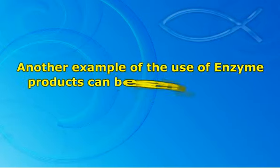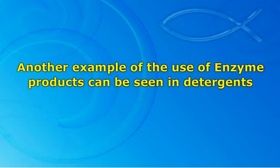Another example of the use of enzyme products can be seen in detergents. Detergents use enzymes as one of their most active components in removing stains. Stains are chemically composed of proteins and fat, which makes them vulnerable to the actions of enzymes since enzymes are capable of breaking down protein and fat. Also, some enzymes perform better in higher temperatures and some in lower temperatures — characteristics essential in knowing when to wash in hot or cooler water for highly colored clothing.